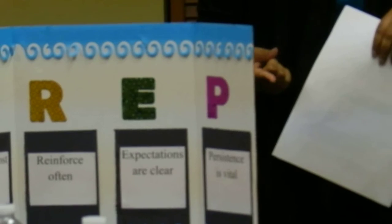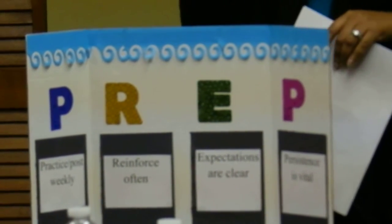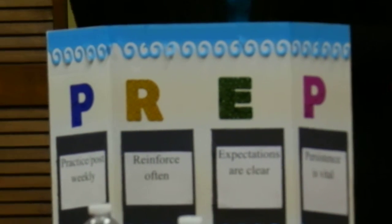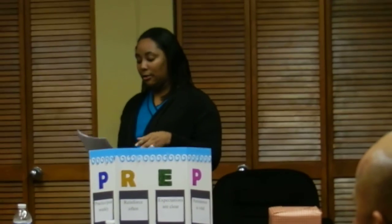The E in PREP stands for expectations are clear. Are your expectations spoken? Are they posted? And are they kid friendly? Children's church is about our children, so it's different from being in the sanctuary. You're not going to tell a four-year-old that their responsibility is to listen to the voice of God — you have to make it something they can relate to. Here are two sets of rules that can be kid friendly.